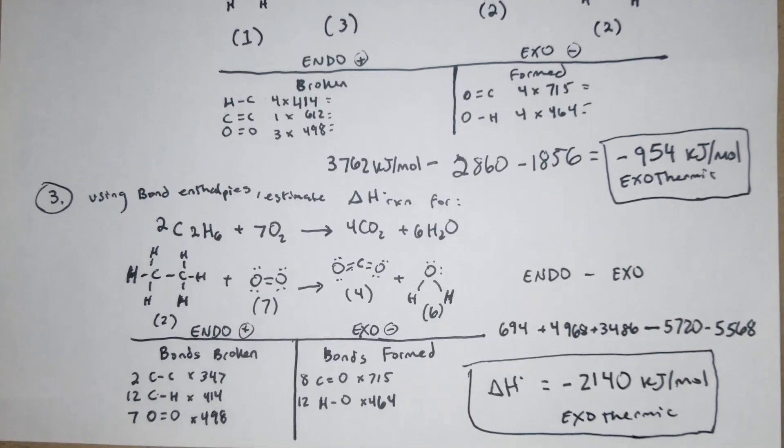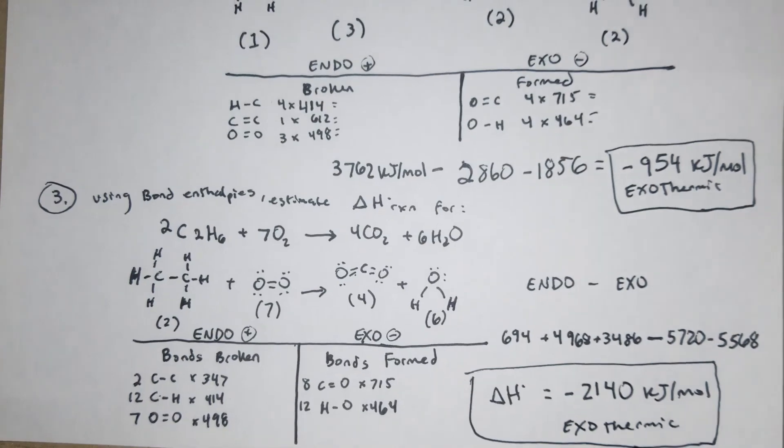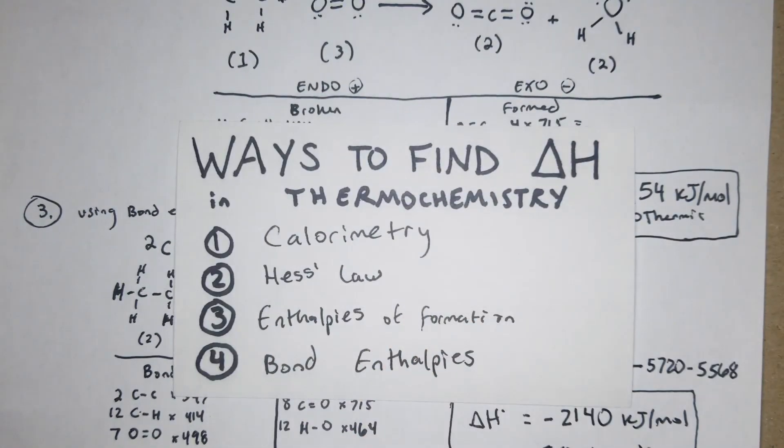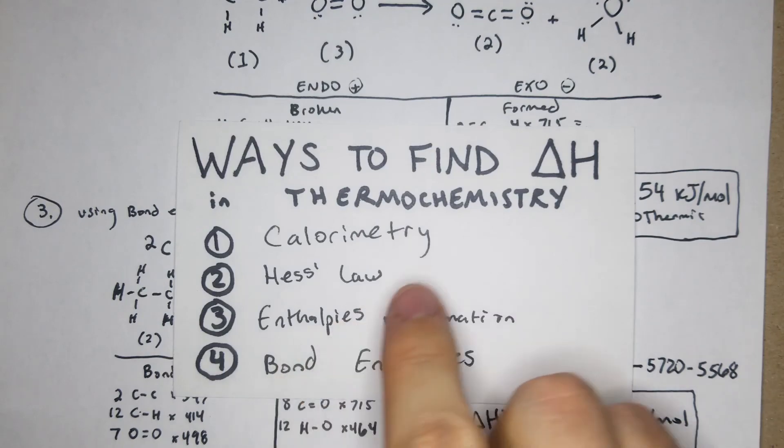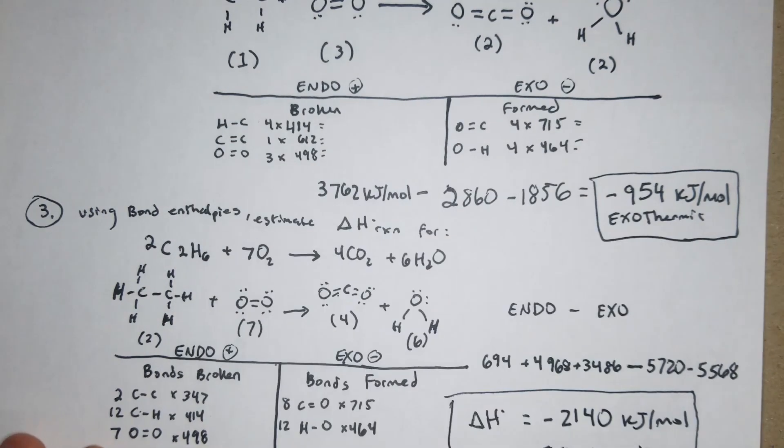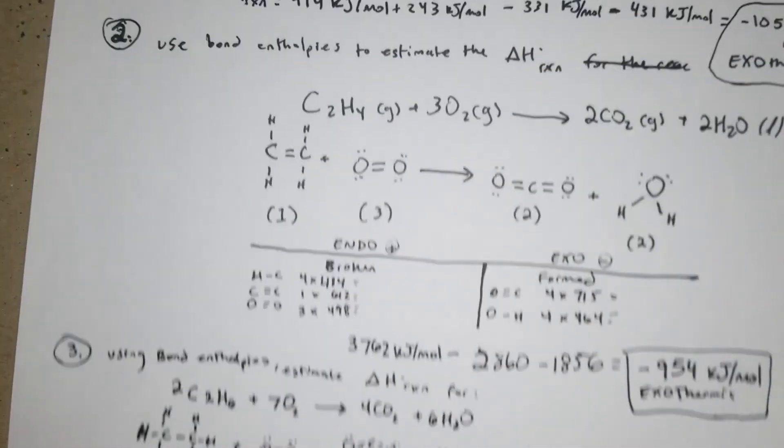And there we have it. So that is the fourth way to find delta H or enthalpy. If you wanted to go over calorimetry, Hess's law, or enthalpy of formation, you can check out the previous three videos. Yeah, hopefully this helps someone.